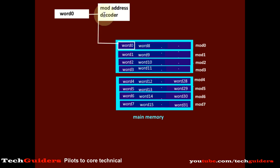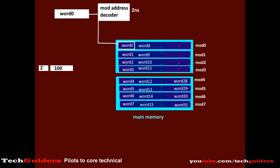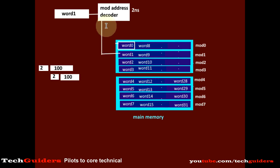In low-order interleaving, successive words are kept in successive memory modules. When the processor refers to any word address, with that address it should be able to find out in which module that word resides, and then it can access the word from that module. So here there is an added overhead of the module address decoder. Suppose this overhead is 2 nanoseconds and the data transfer time is 100 nanoseconds. So for word 0, the total cycle will be 2 nanoseconds plus 100 nanoseconds for data transfer. But after 2 nanoseconds the decoder will be free, hence it can start processing the next word, word 1, and after decoding word 1 it will find that this word resides on another memory module, so it can parallelly service the request for word 1.